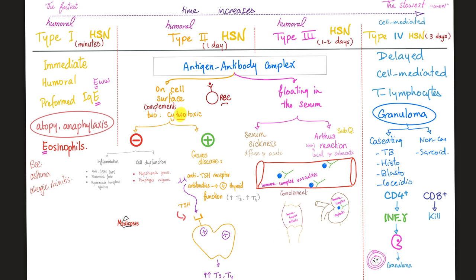Type 4 is the most delayed — about 72 hours, slightly less or more. This is cell-mediated immunity. I'm not going to send antibodies to destroy; I myself will go kill that bacteria face-to-face, cell-to-cell. If I can kill the invader, I will destroy it using T-cytotoxic cells. But if I can't kill it, at least I can surround it in a granuloma. This granuloma can have caseous necrosis, such as the caseating granuloma of tuberculosis, histoplasmosis, blastomycosis, coccidioidomycosis — or it could be non-caseating, a famous example being sarcoidosis. CD4 T lymphocytes will secrete interferon gamma, which stimulates macrophages to make the granuloma.